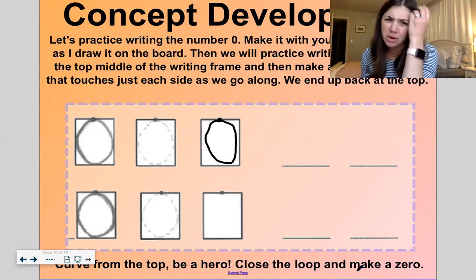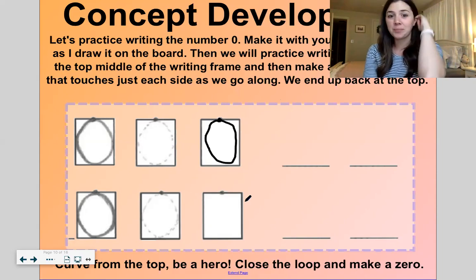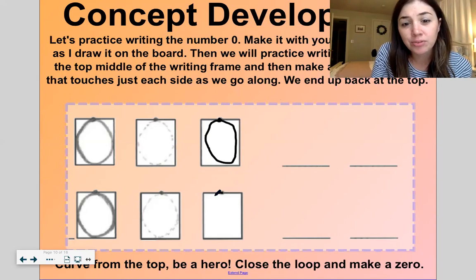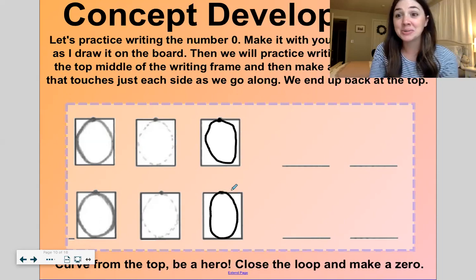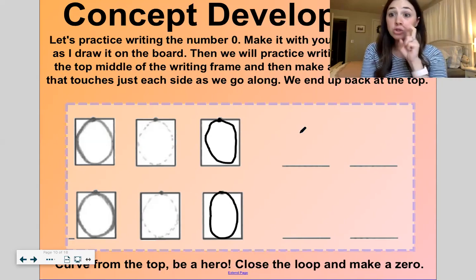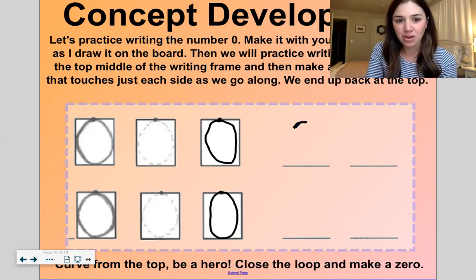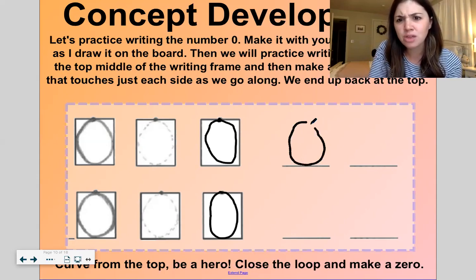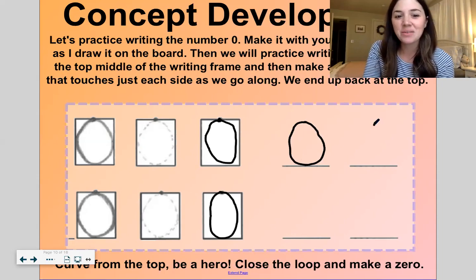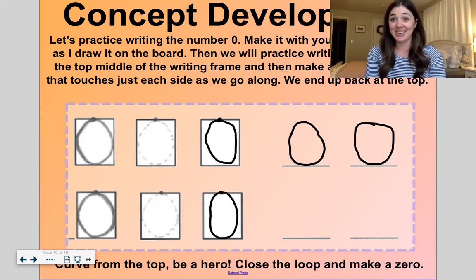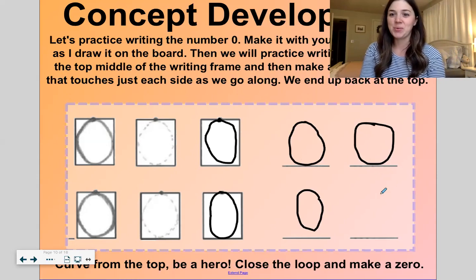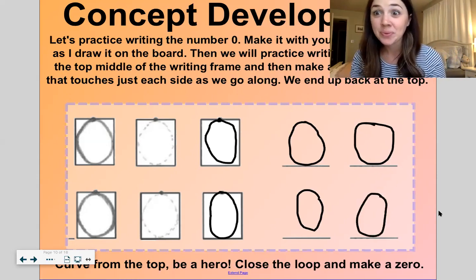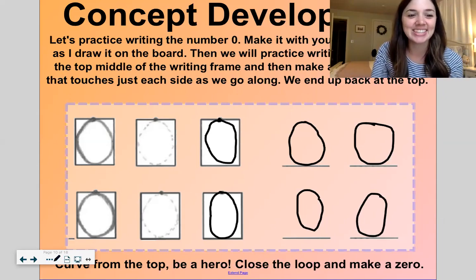So if I start at the chocolate chip, I do a curve from the top. Be a hero. Now close the loop. Make a zero. So it kind of looks like the letter O, doesn't it? Yeah. I think it looks like the letter O. Let's try again. Curve from the top and be a hero. Close the loop and make a zero. Okay. Now you have something to write with. I want you to try writing two zeros by yourself. Curve from the top. Be a hero. Close the loop. Make a zero. Curve from the top. Be a hero. Close the loop and make a zero. Oh, I made this one a little bit funky, didn't I? Sometimes it's hard to write on the smart board like this. Good work, kiddos. Show me your zeros. Oh, they look good. Nice work.